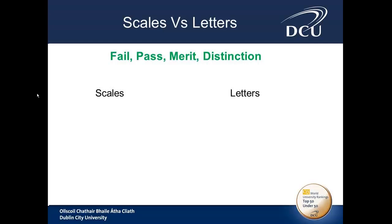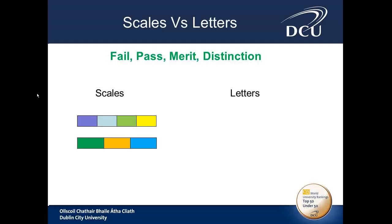If we created this scale in Moodle with four points — fail, pass, merit and distinction — Moodle would automatically take the mark the lecturer provides and map it to the scale. In a four-point scale, the marks are split in blocks of 25 percent, so any mark between 0 and 24 is mapped to the first point, between 25 and 49 is mapped to the second, and so on. In a three-point scale, the marks are split in blocks of 33 percent.